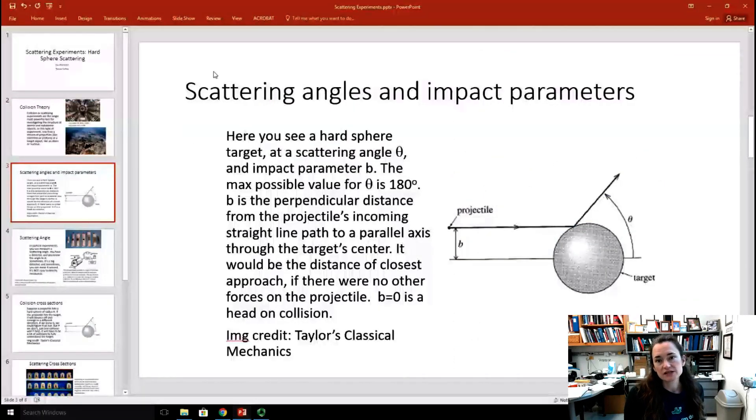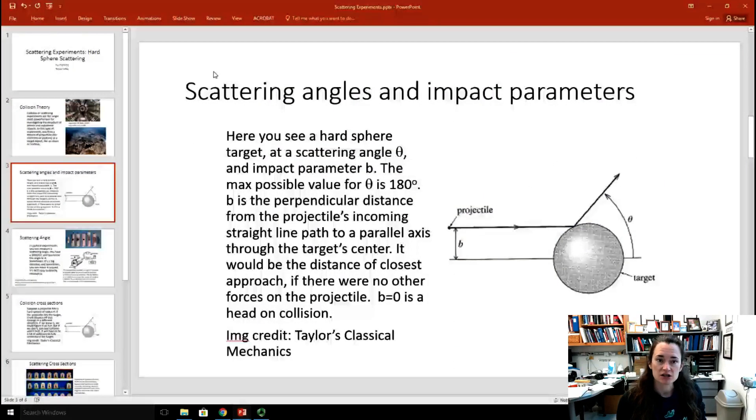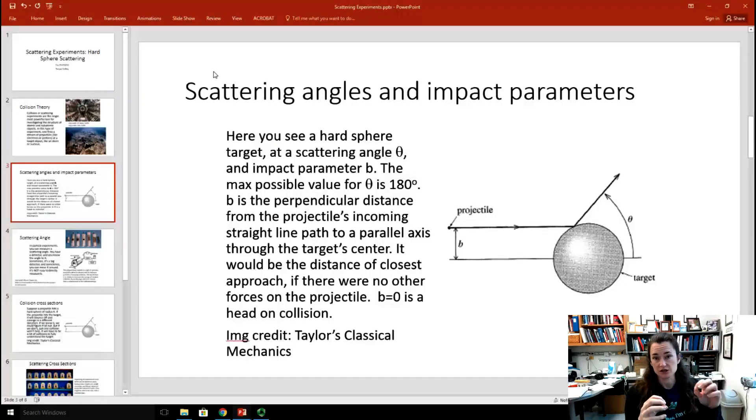It's easiest, perhaps, to understand hard sphere scattering, because in hard sphere scattering, you have a projectile incident on a hard sphere, and they're making actual physical contact. This is easier to visualize than things like the Coulomb force repulsion and other types of forces, which act and scatter particles even though those particles aren't touching.